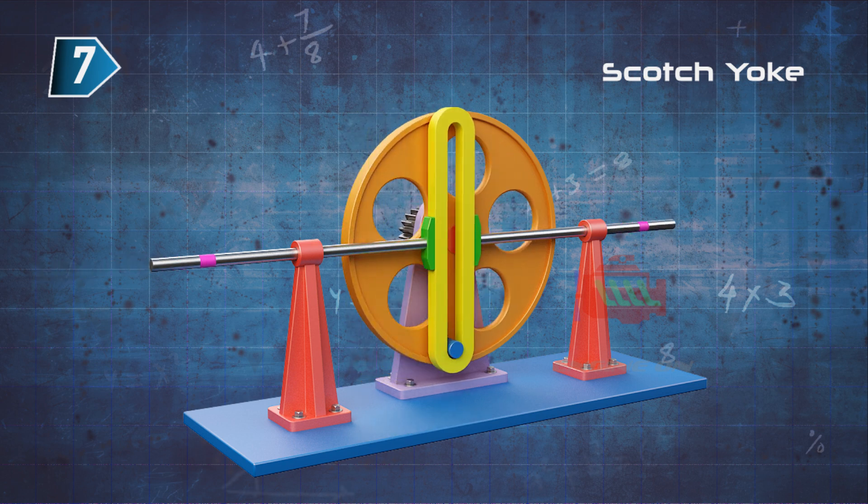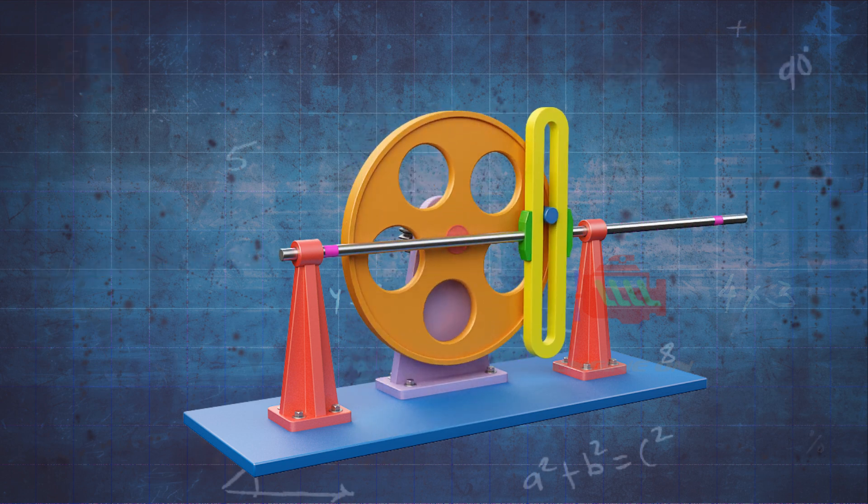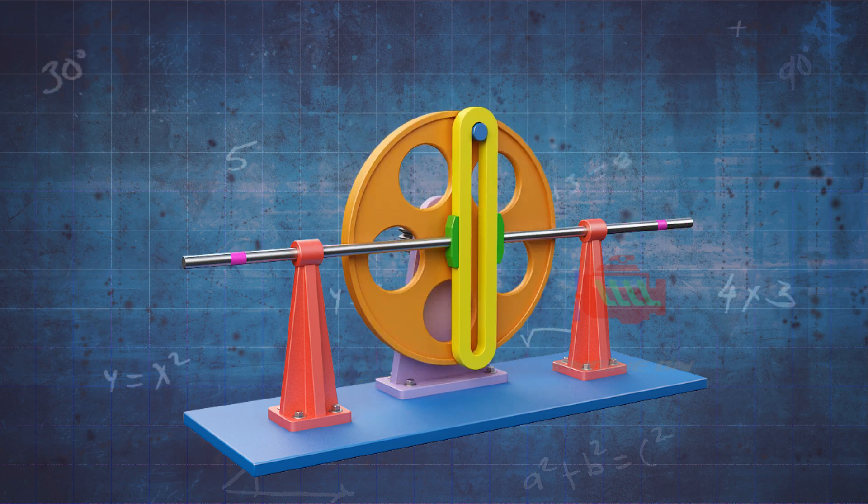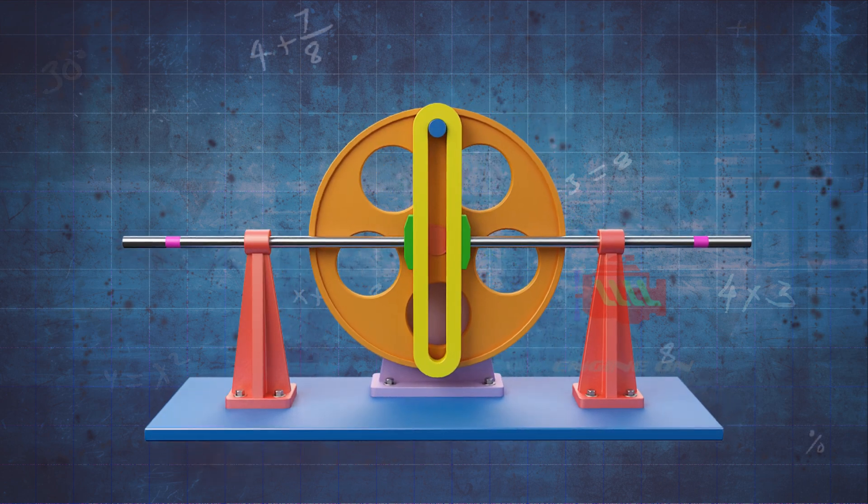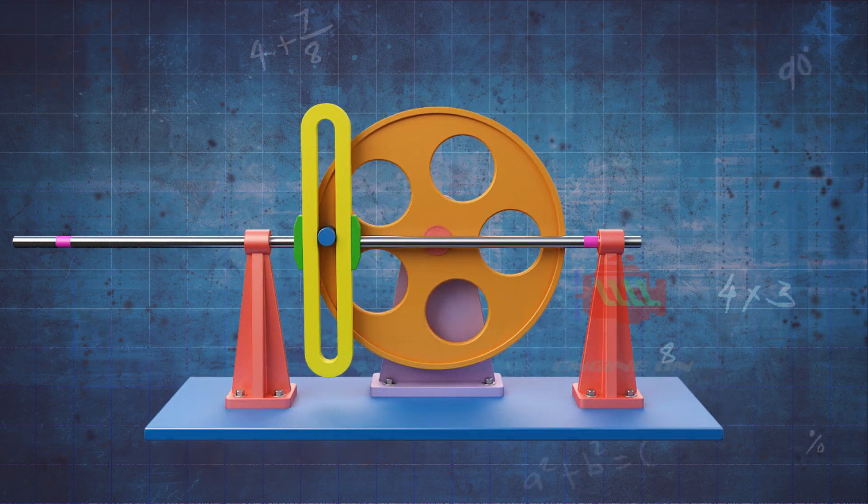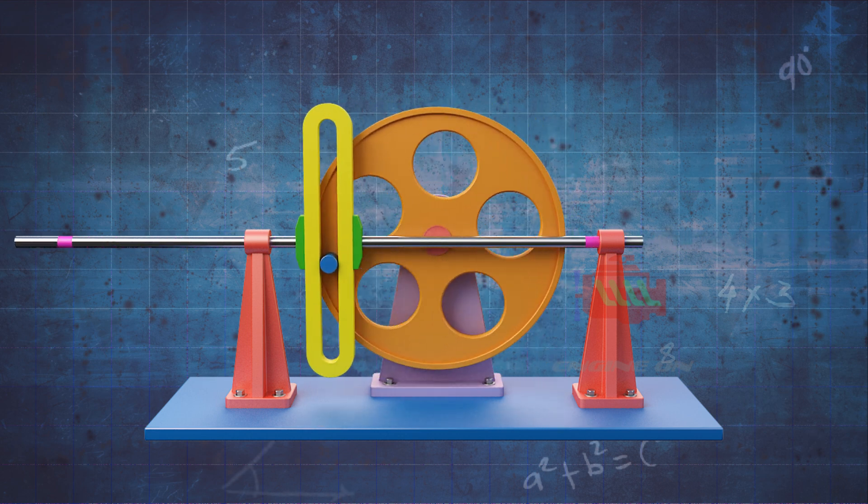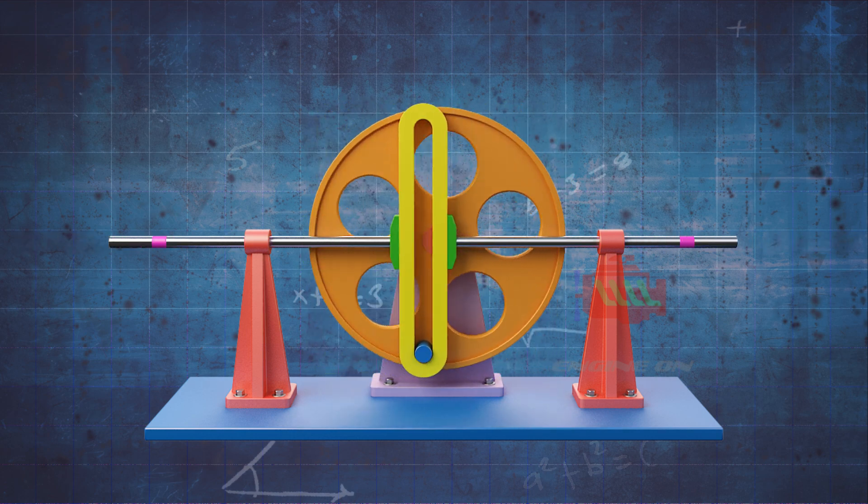The scotch yoke mechanism is a mechanical device that converts rotary motion into linear motion, or vice versa. It consists of a slotted yoke and a pin-mounted disc. As the disc rotates, the pin slides within the yoke slot, producing a linear movement. It's also known as a slotted link mechanism.